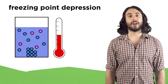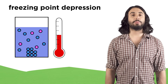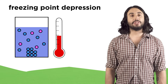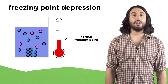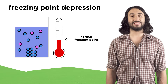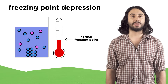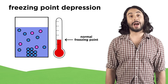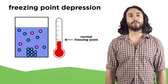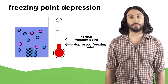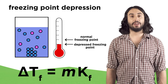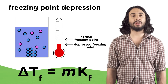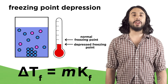Freezing point depression is similar but deals with the interface between the liquid and solid phases. For a liquid to freeze it has to form a lattice. The presence of solute particles interferes with the ability of the solvent particles to efficiently form the lattice, so to compensate the system will have to reach an even lower temperature to freeze. The change in freezing point is given by the molality of the solution times another constant.